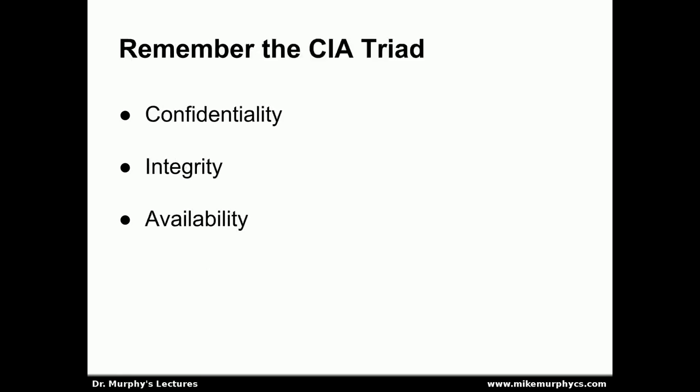Recall from the introduction to security lecture the CIA triad, which stands for Confidentiality, Integrity, and Availability. These are the three principles to which we want a system to adhere in order for that system to be secure.